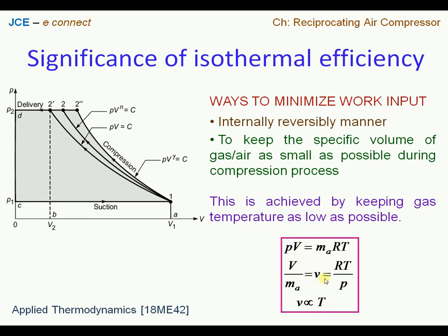Using the ideal gas equation, PV equals mRT, and rearranging, we see that specific volume is proportional to temperature. This equation shows us that with reduced temperature, the specific volume will also reduce. Therefore, from the PV diagram, in order to arrive at reduced specific volumes, one has to go ahead with a cooling process during compression. Among the three alternatives, isothermal compression consumes the least work input.